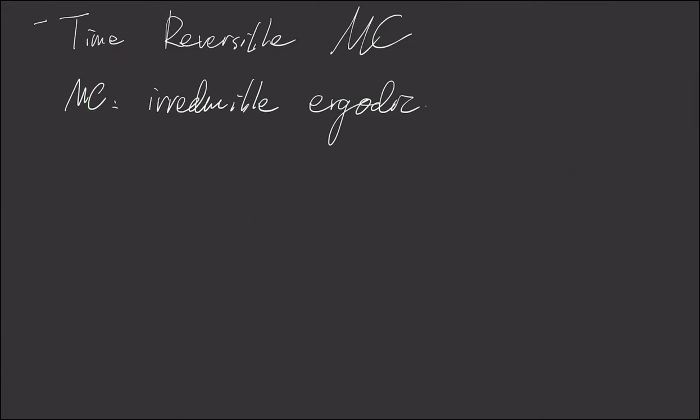Ergodic means it's not periodic, it's aperiodic. And stationary means essentially we have pi equals pi times the probability transition matrix. We can think of this stationary as meaning this Markov chain has been in operation for a long time, as the textbook says.